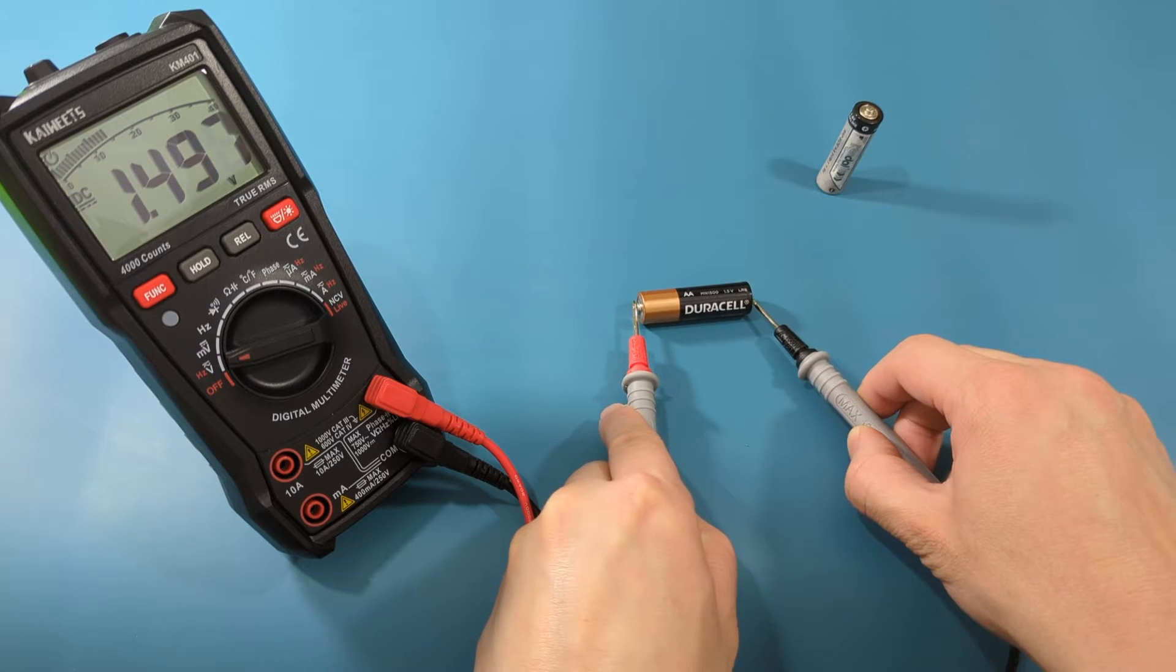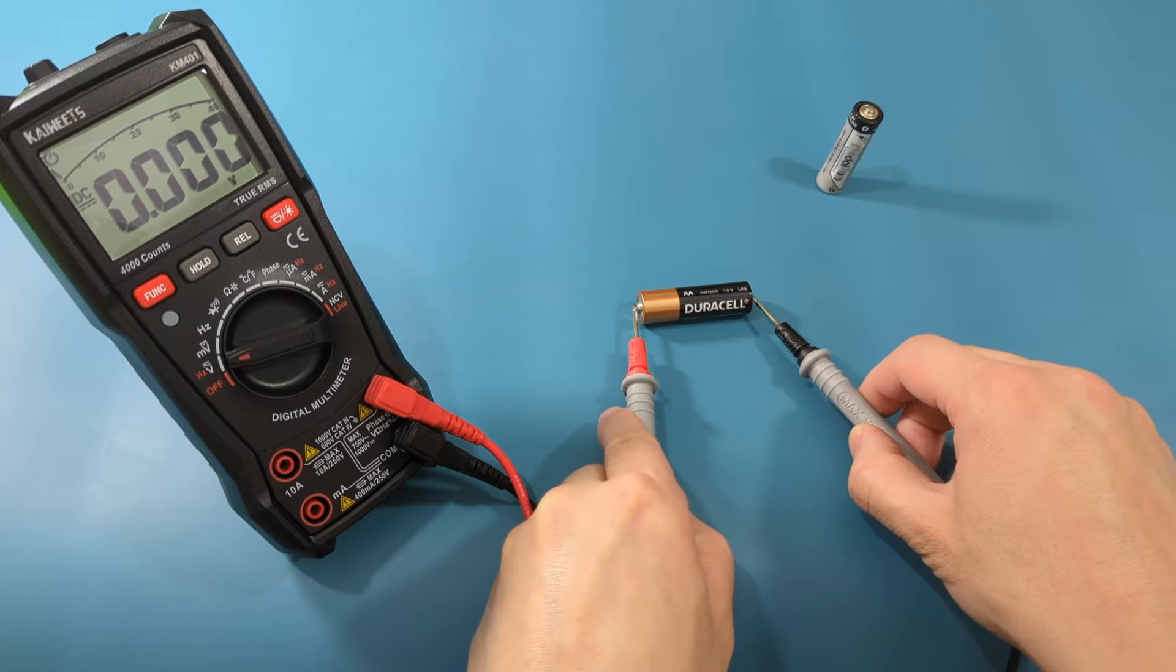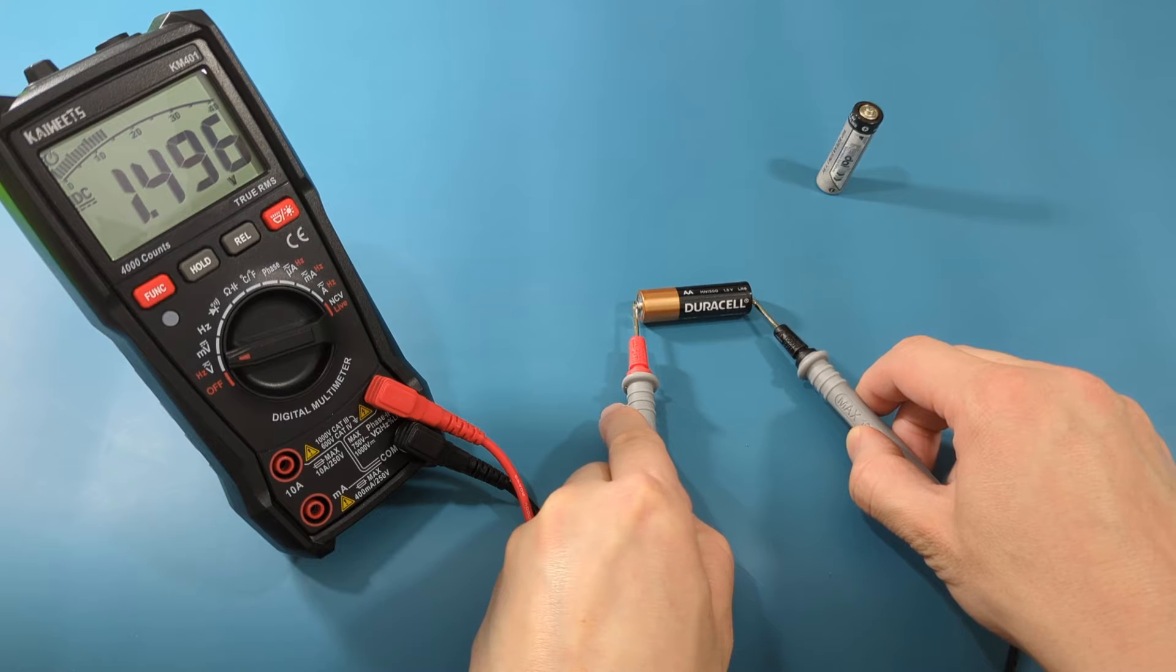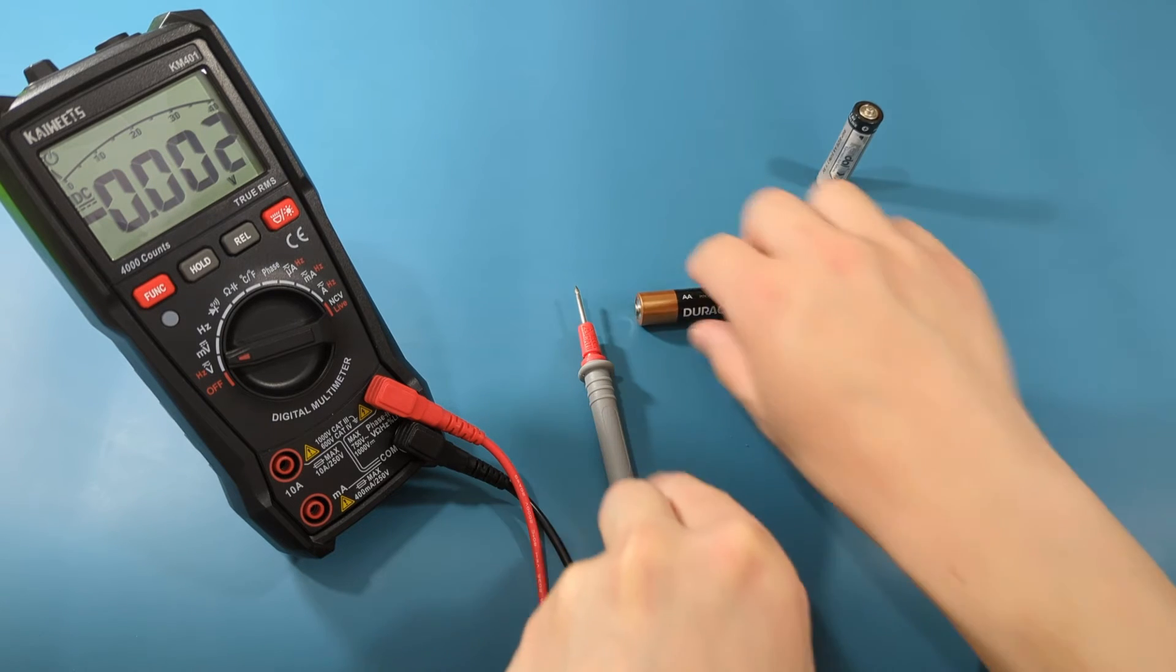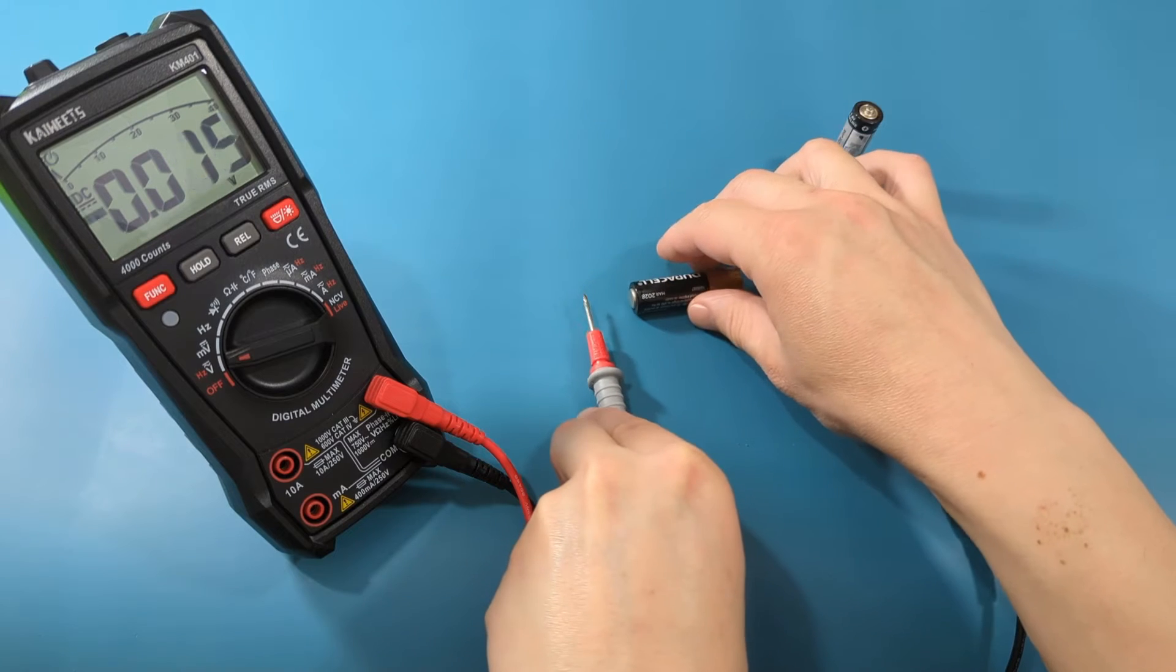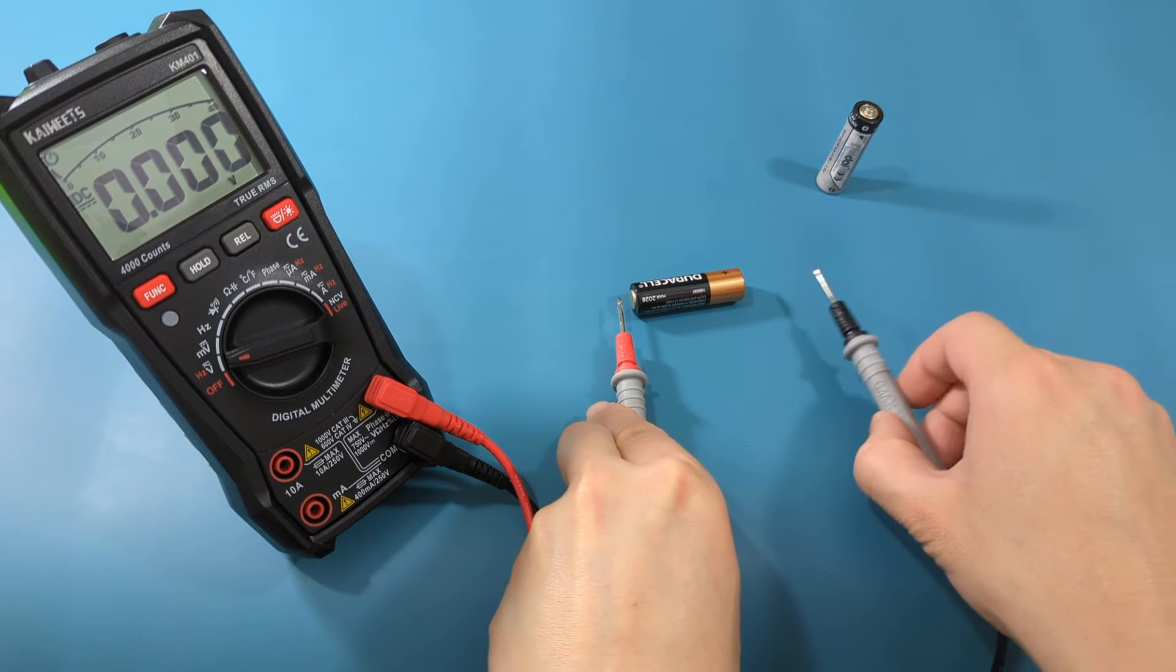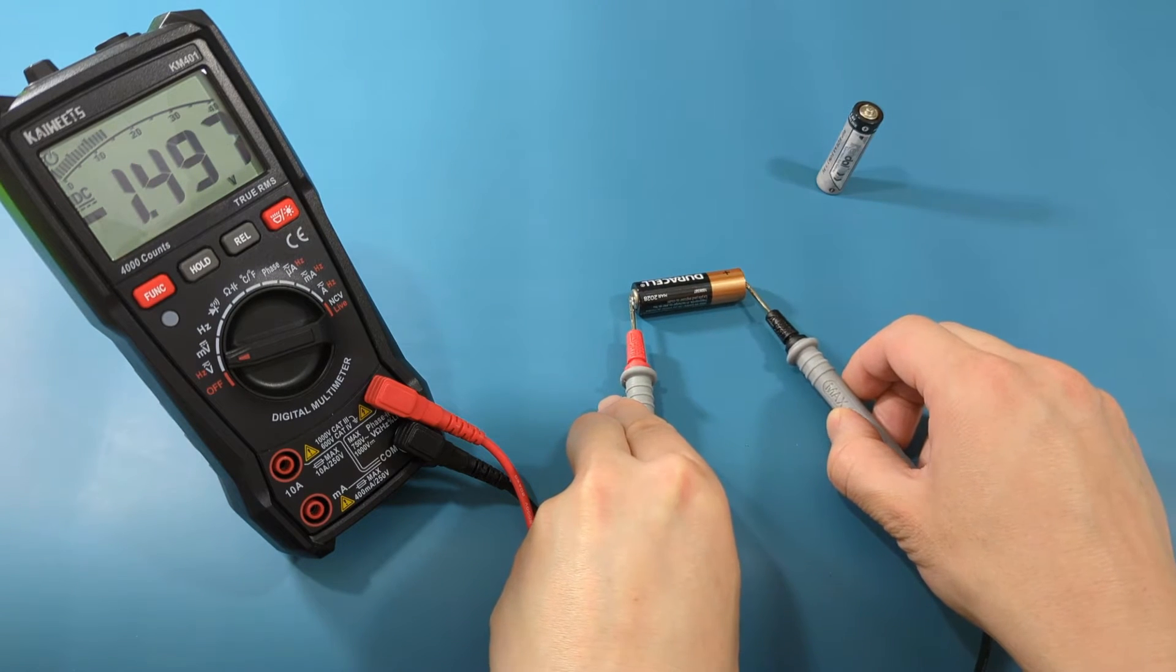Touch the red probe lead to the positive end of the battery, and the black probe lead to the negative end of the battery. Since the reading is close to 1.5, this battery is still good. If you reverse the battery, the reading shows the same number, but it will be negative.